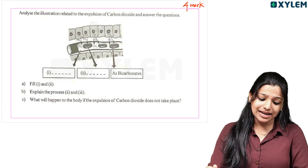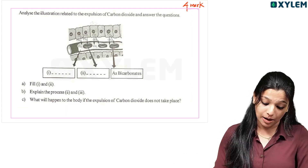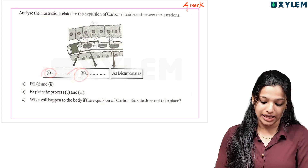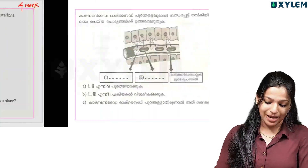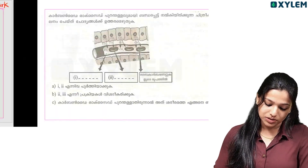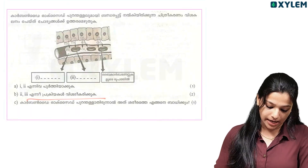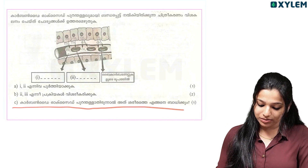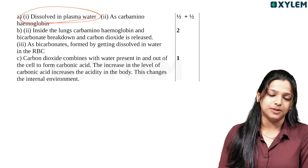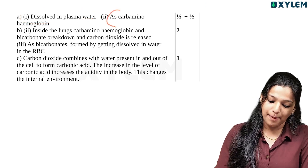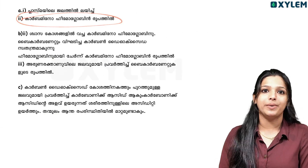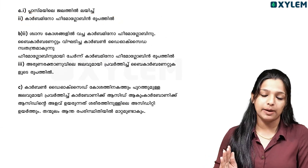Now, let's analyze the illustration related to expulsion of carbon dioxide and answer the question. Carbon dioxide is transported in the body in three forms: dissolved in plasma water, as carbaminohemoglobin, and as bicarbonates. We need to identify and fill in these three things.